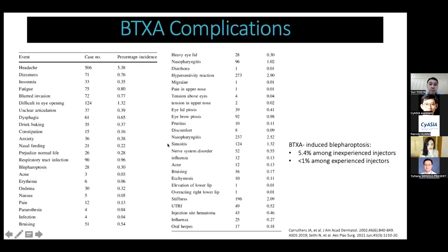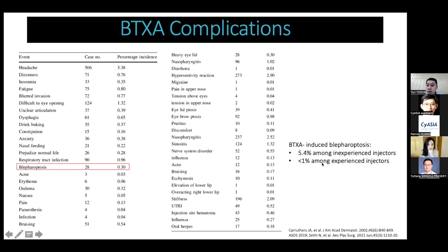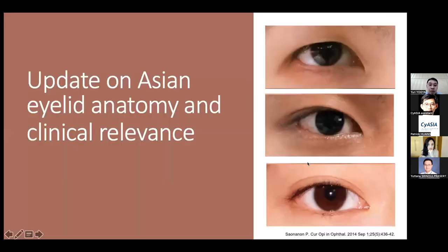This table explains the incidence of botulinum toxin complications. The most common is headache. The incidence of blepharoptosis is quite low — around 0.3 percent in a multicenter study. Botulinum toxin-induced blepharoptosis was estimated around 5.4 percent among inexperienced injectors and less than one percent among experienced injectors.